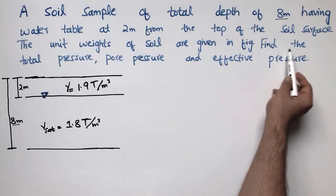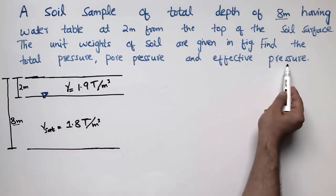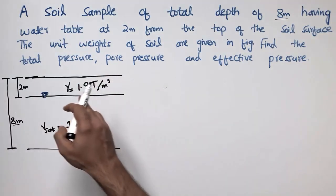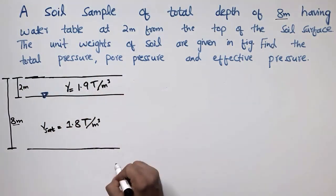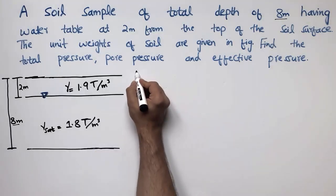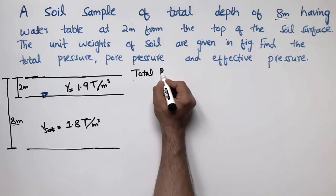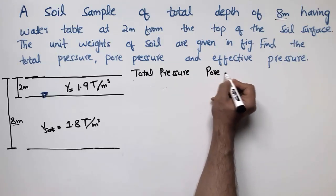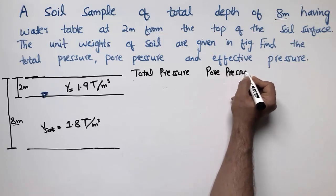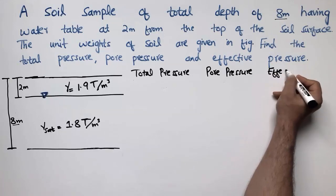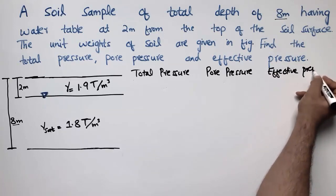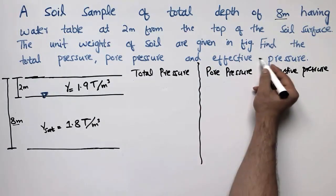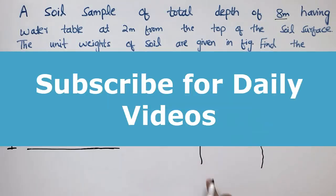We are requested to find the total pressure, the pore pressure, and the effective pressure of this soil sample. I will find these three unknown pressures and draw a margin line between them since they are quite different from one another.